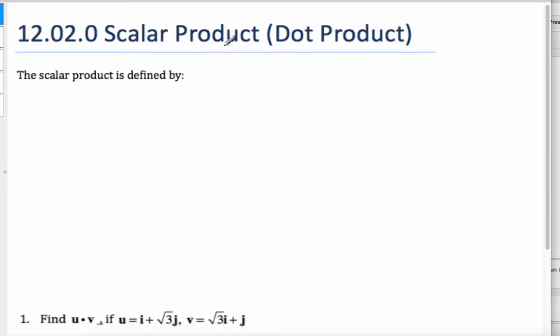This is a lesson on the scalar product or the dot product. The scalar product is defined by two vectors as a product of two vectors. We'll call them A vector and B vector, and the scalar product is A dot B. If this is the angle between them when they're tail to tail, this is equal to the magnitude of A times the magnitude of B cosine of theta.